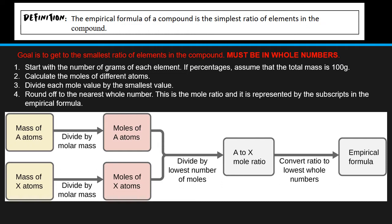So the goal is to get to the simplest ratio of elements in a compound. It has to be whole numbers. There's no decimals here, whatsoever. Grade 10s, if I see a decimal, you're going to mess up your entire calculation. And usually these calculations are eight, nine steps. So it has to be a whole number.